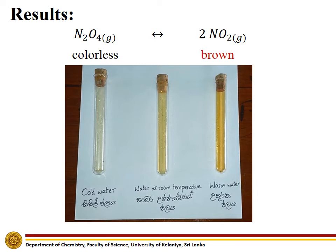An increase in temperature will cause the reaction to shift in a way that uses the excess heat, which favors the endothermic reaction that produces nitrogen dioxide. A decrease in temperature will result in a shift to produce heat, which favors the exothermic reaction that produces dinitrogen tetraoxide.